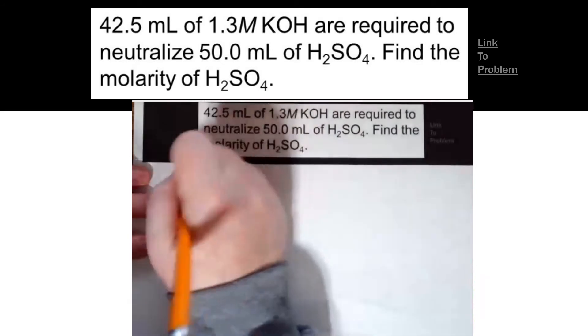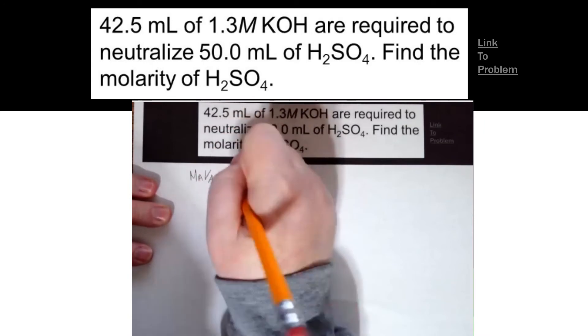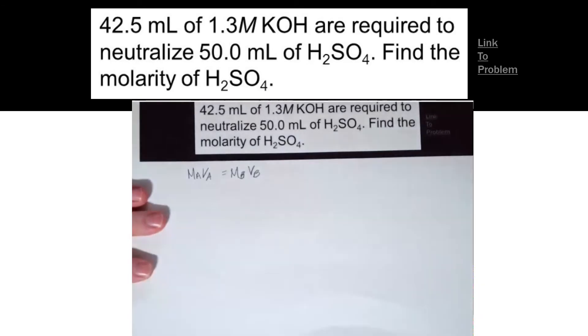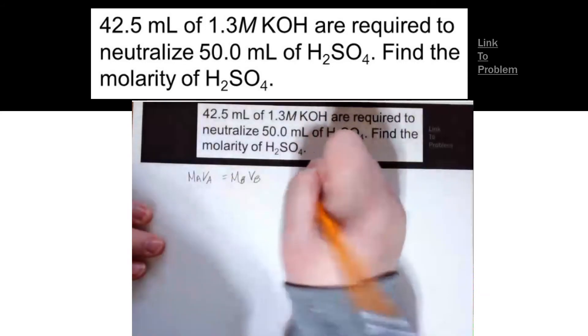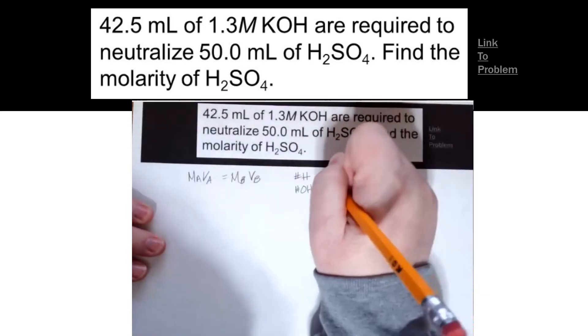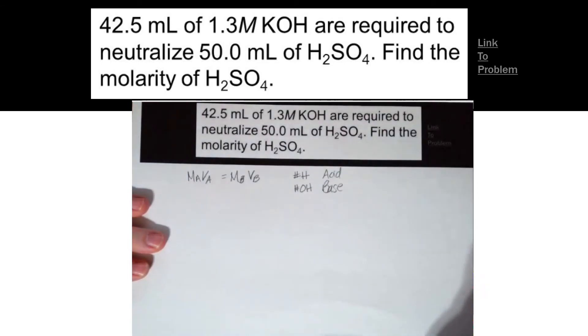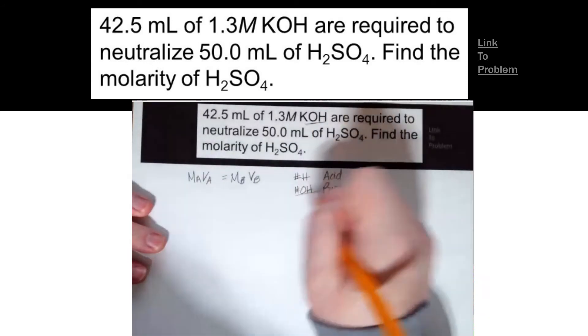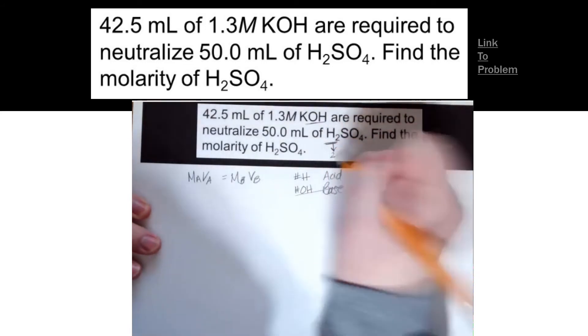So let's look at our titration equation, which is useful for figuring out neutralization reactions. MAVA equals MBVB. Remember that's on the reference table. What I have to remember is that the number of H's and the number of OH's matter. So I have to go back to my problem and see what acid and what base I have. So KOH is my base. There's only one OH so I don't need to worry about it. But look at this. H2SO4. It has two H's.